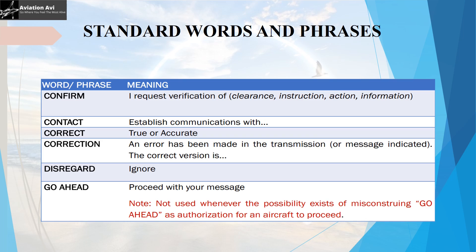For example, the ATC transmits 'contact 121 decimal niner' but the actual frequency is 121 decimal eight. In that case, after transmitting, the ATC would say 'contact 121 decimal niner, correction, 121 decimal eight.' The next phrase is 'disregard', used to indicate that the previously made transmission or clearance should be ignored.